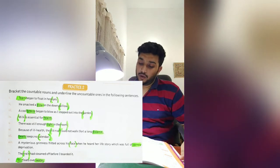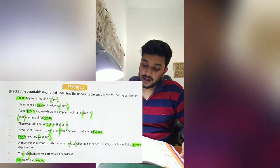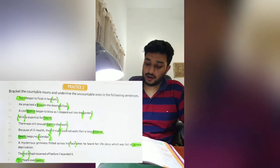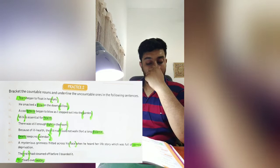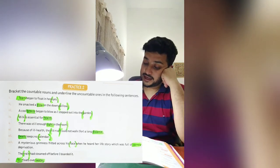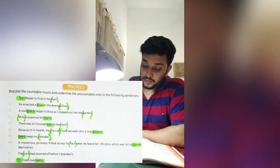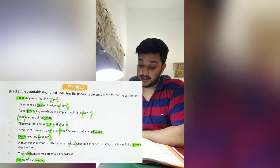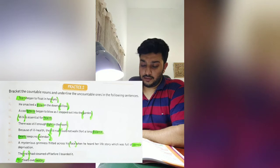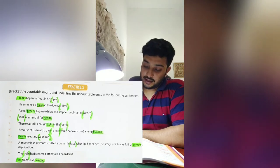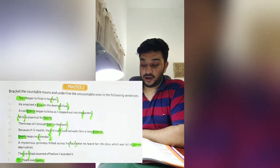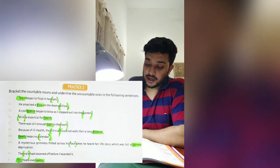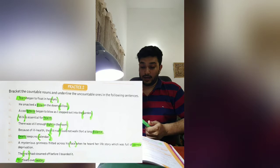'A cold breeze began to blow as I stepped out into the garden' — garden is a countable noun and breeze is an uncountable noun. 'Milk is essential for health' — milk is a countable noun and health is an uncountable noun. 'There was still enough light in the room' — light is an uncountable noun and room is a countable noun. 'Because of ill health the old man could not walk for a long distance' — old man is a countable noun and distance is an uncountable noun.